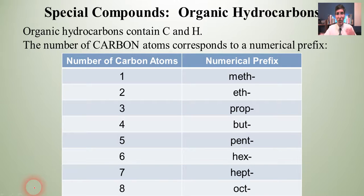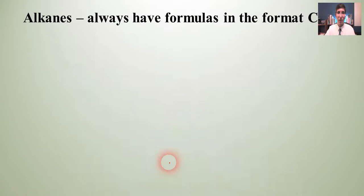So what we're going to do is use these numerical prefixes to name some very simple organic hydrocarbons. Now, the camera here is covering up the important part here, so let me write it out. Alkanes. These are organic hydrocarbons that always have formulas in the format CXH2X plus 2. So that means if the X, just as an example, is 6, the H, 2X plus 2, well, 2 times 6 is 12. Add 2 to that, it gets us 14. And the 6 is hex, and so we'd call that compound hexane. So alkanes are going to end with this suffix "-ane."